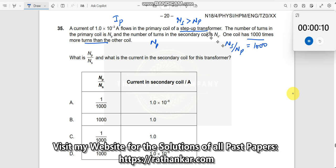This qualifies this statement. What is NP by NS? NP by NS thus would be equal to 1 by 1000.